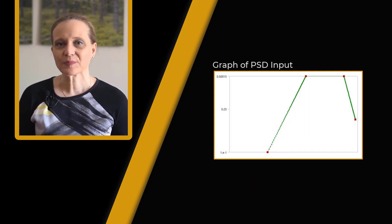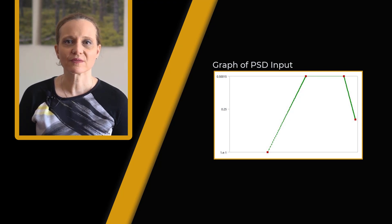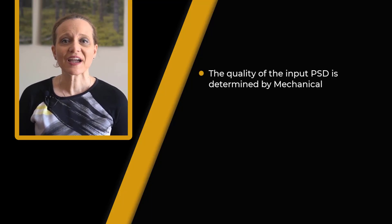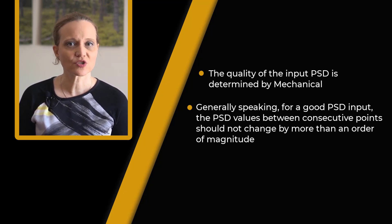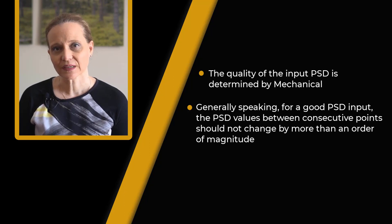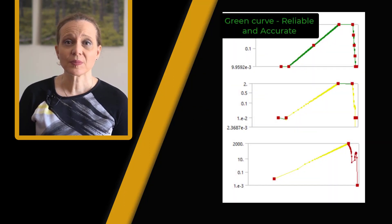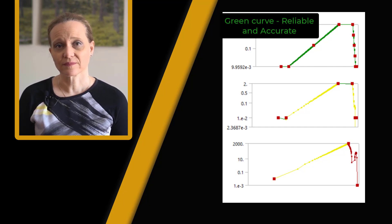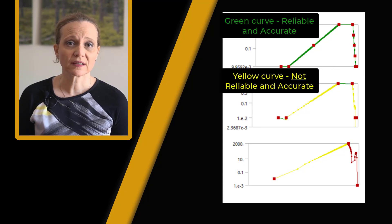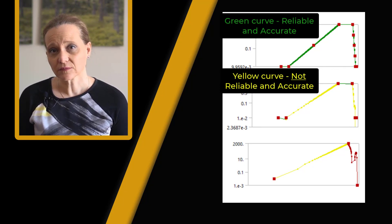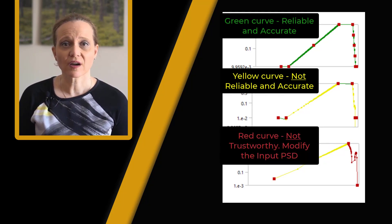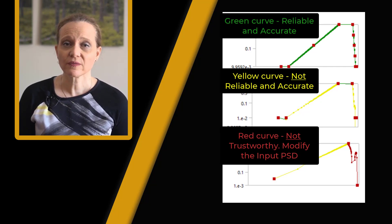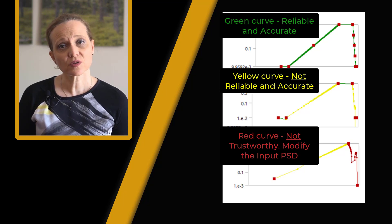Once the data has been input, the PSD curve is plotted in the graph window. The quality of the input PSD is automatically judged by the software. For a good PSD input, the PSD values between consecutive points should not change by more than an order of magnitude. If the curve is marked green, the PSD values are considered reliable and accurate. If it is yellow, it is a warning indicator and results may not be very reliable. If the curve is red, the results are not considered trustworthy, and it is recommended that you modify your input PSD loads prior to the solution process.